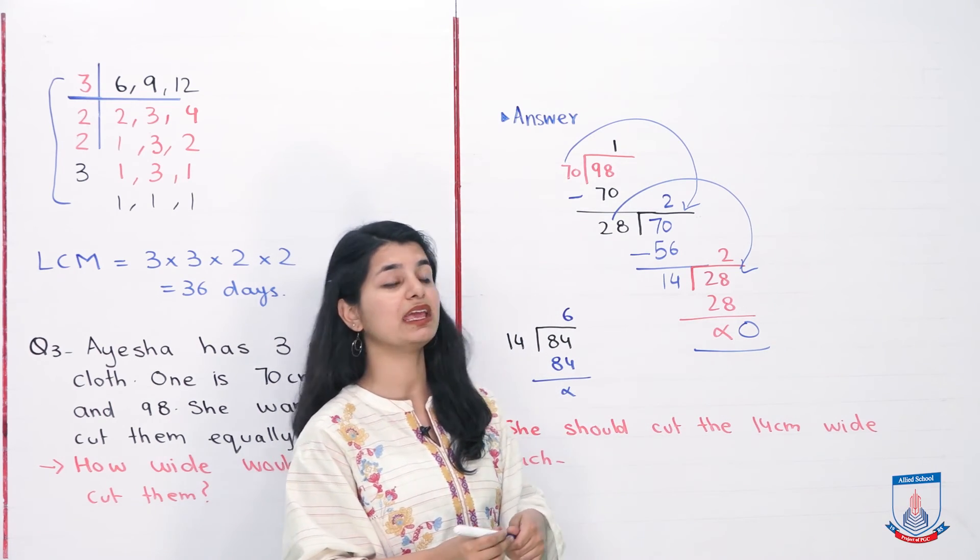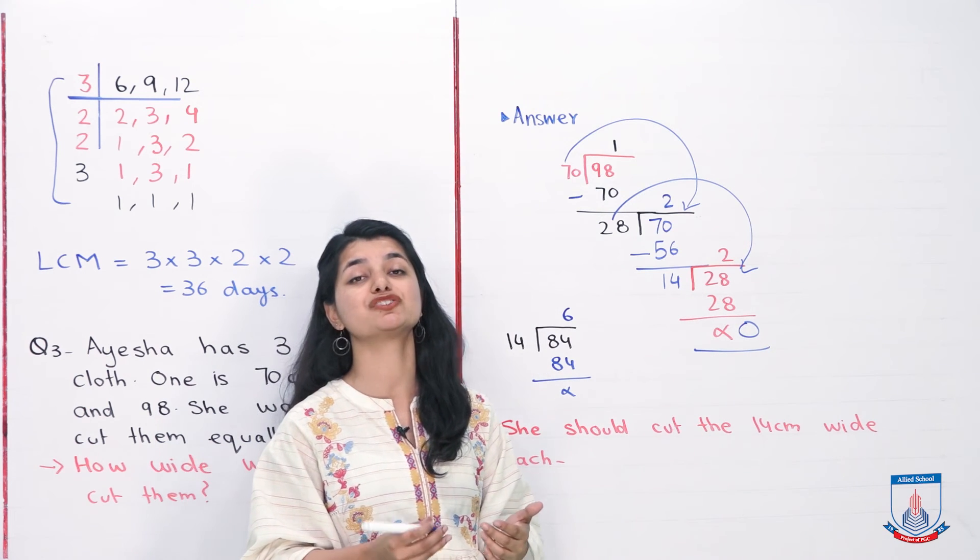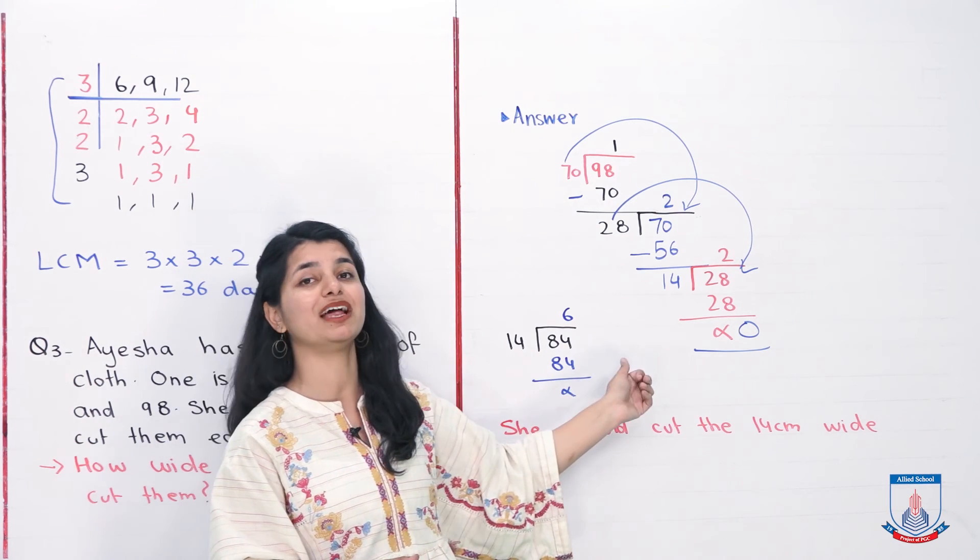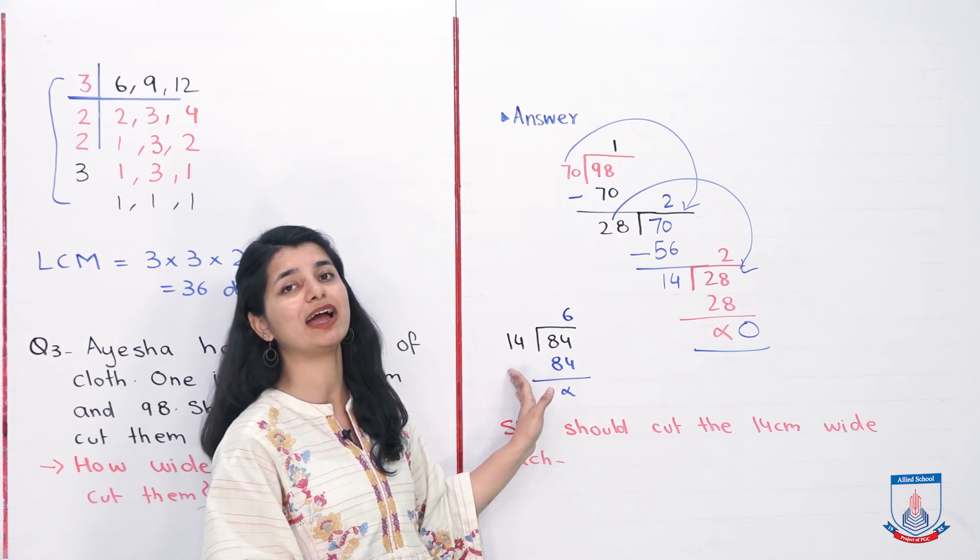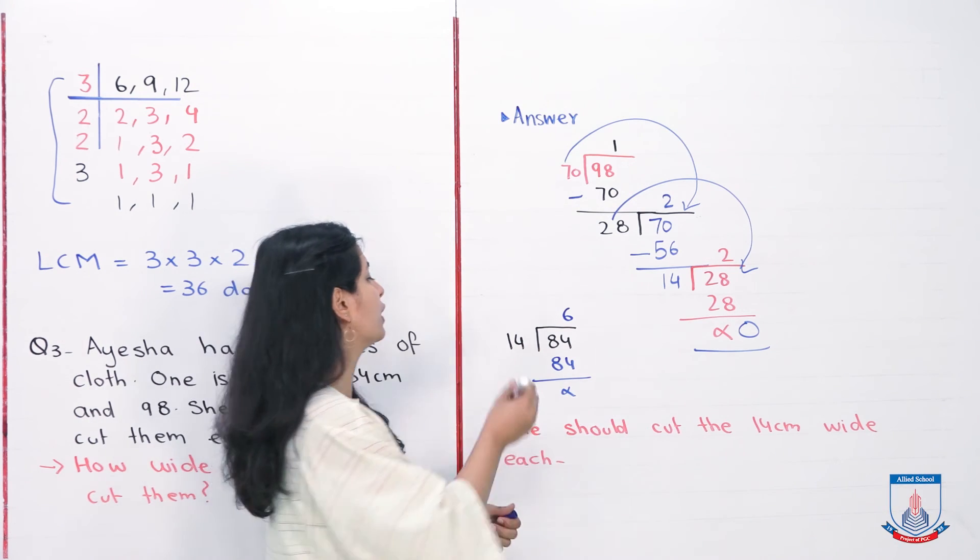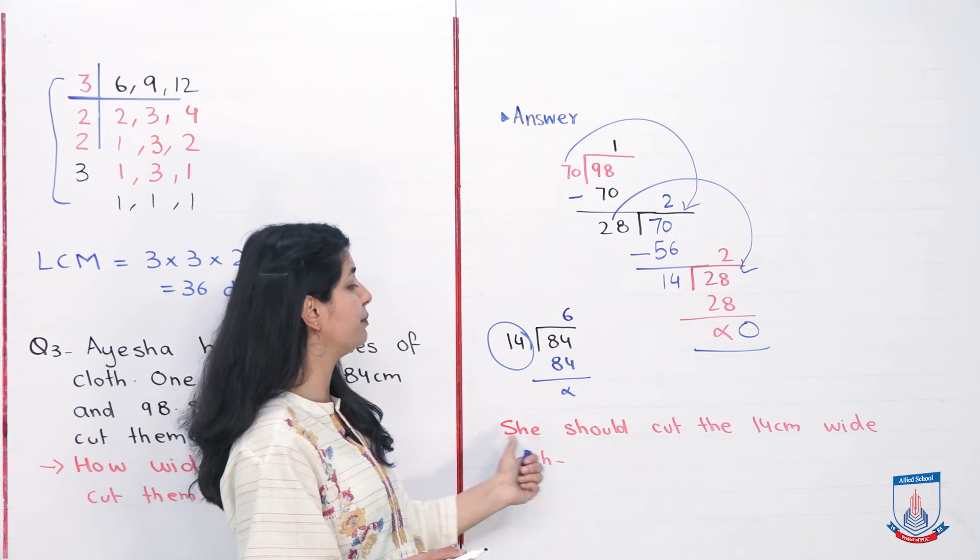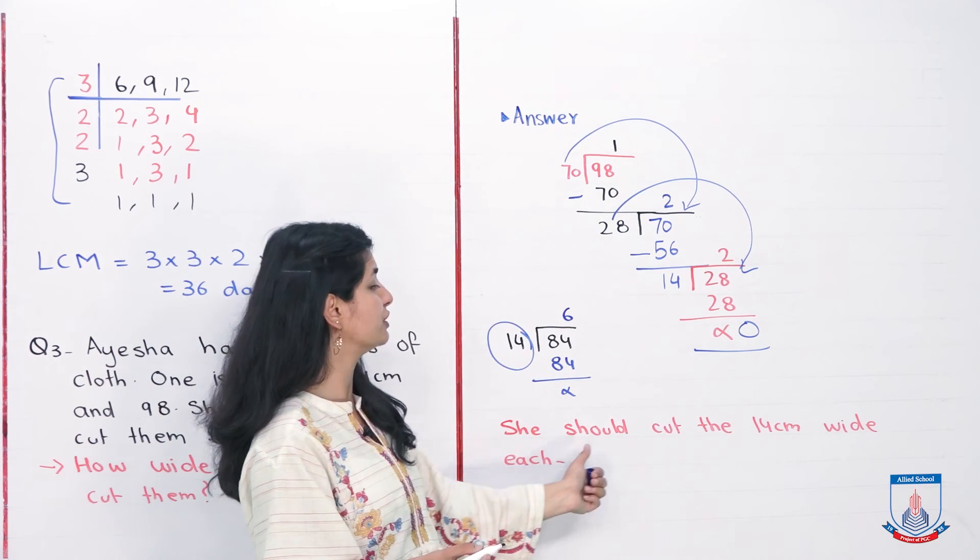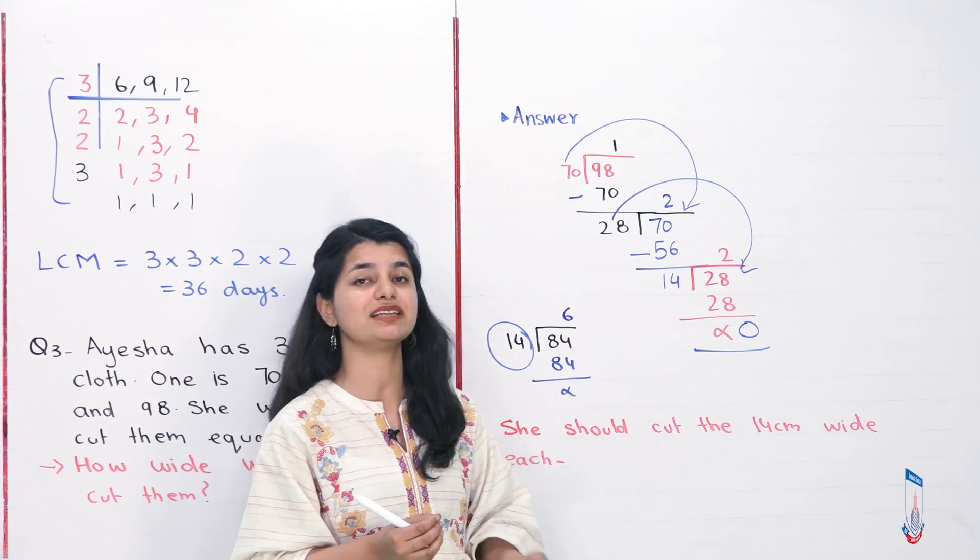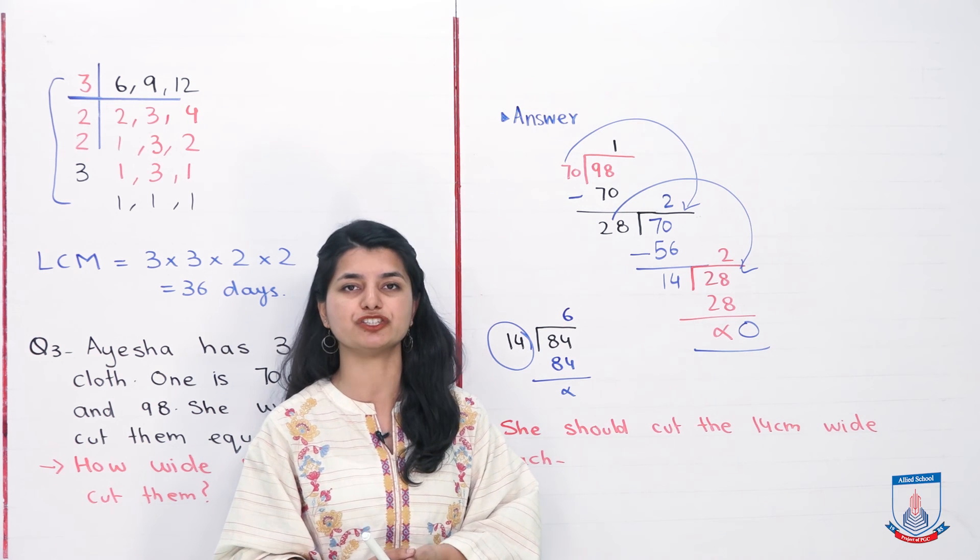Now I have to continue until my remainder is 0. I will test it with 84, which is my third number. When I divide by 14, my remainder is 0. So the final divisor when the remainder is 0 is 14. Hence, my answer is 14 cm. She should cut the cloths 14 cm wide each. So cut the cloths in 14 cm, and then all cloths will be cut in equal pieces.